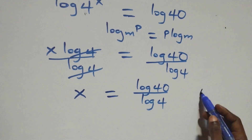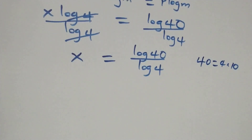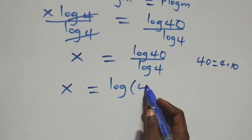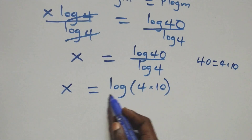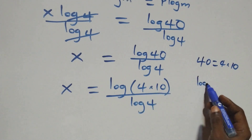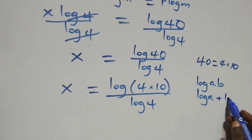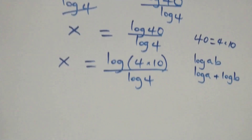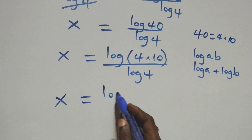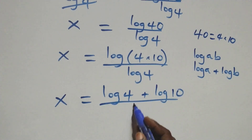From here, we can write forty as four times ten, which implies what we have becomes x equals to log of four times ten, over log four. This follows the law of logarithms: log a times b can be expressed as log a plus log b. So x equals to log four plus log ten, all over log four.